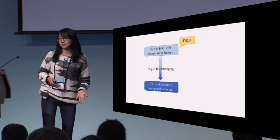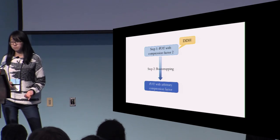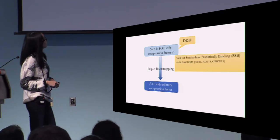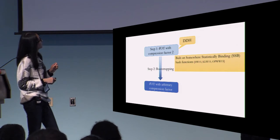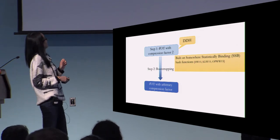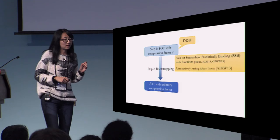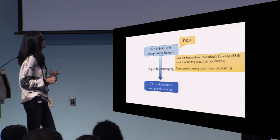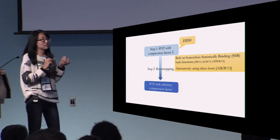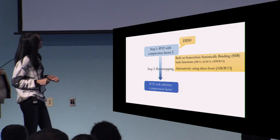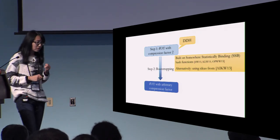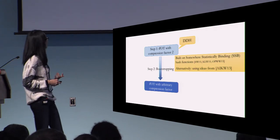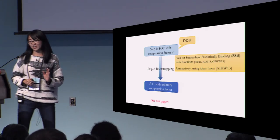All that is left is the base laconic OT with compression factor two — how to construct it from the decisional Diffie-Hellman assumption. Our construction is based on a primitive called somewhere statistically binding hash functions. There is also an alternative approach to construct this primitive using ideas and techniques from the work by Applebaum et al. Please see our paper for the full construction.